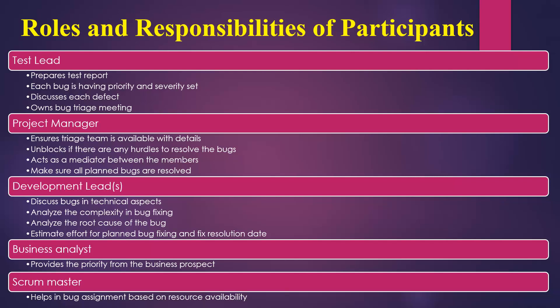The project manager ensures the triage team is available with all the required details. They unblock any hurdles preventing bugs from being resolved and manage resources — enabling team members or bringing in new resources if the current team is busy, so bugs can be fixed and tested quickly within the timeline. The project manager also acts as a mediator between members and ensures all planned bugs are resolved by the committed dates.